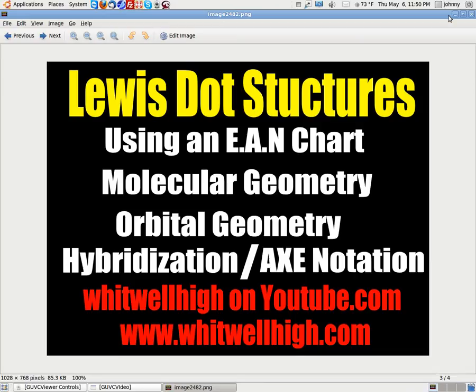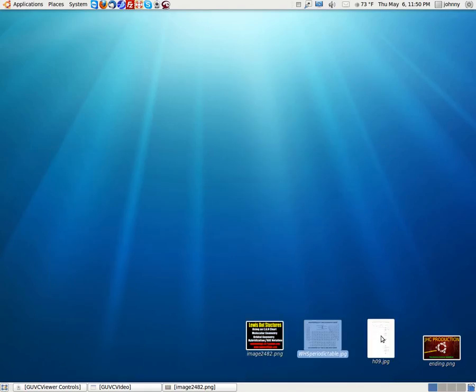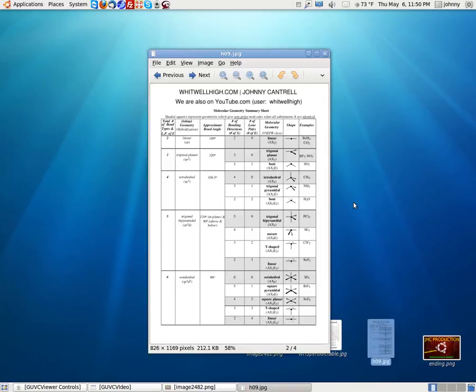Now, you're going to need some handouts. You'll need a periodic table and you'll need this handout, 6A, which explains the orbital geometries and the hybridizations and everything. It's on my website. It's handout 6A on my website and you can download it and print it off and you can use it for your problems. Anyway, let's go ahead and get started.